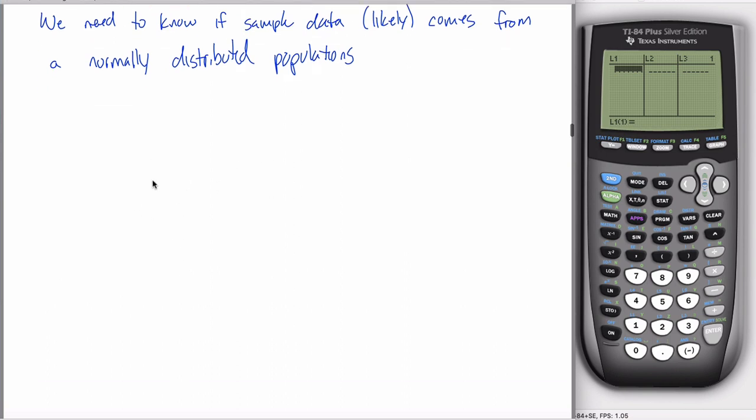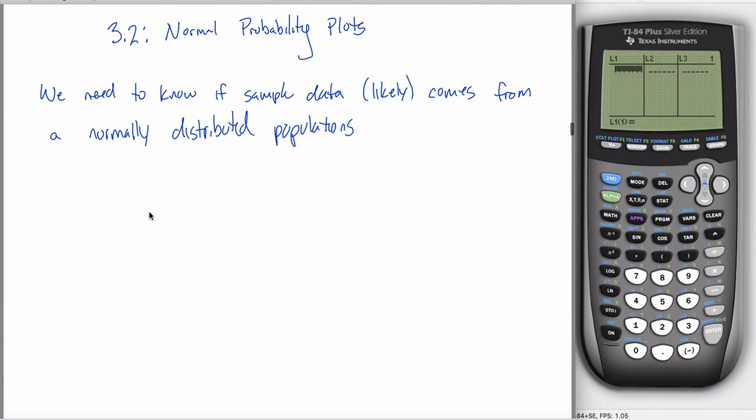We need to know if sample data, likely, comes from a normally distributed population. Turns out that's fairly important to know. So if I just had some data, let's see, I'm going to try to make up some data that would not be normally distributed. Let's come up with something that's left skewed. So let's start out with a couple really small numbers, like 2, and then 10, and then 18, and then 20, 22, 23, another 23, 24, another 24, another 24, a 25, a 25, and a 26.